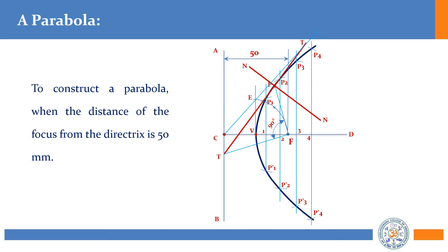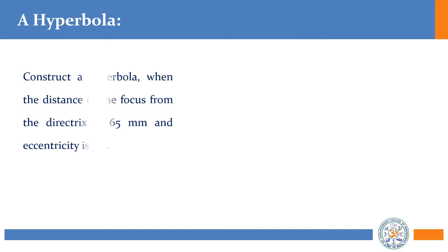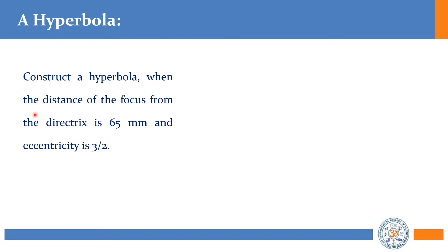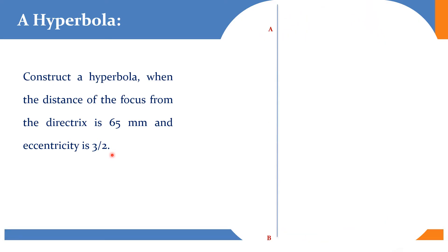This is the procedure to construct a parabola. The same procedure you need to follow to construct the hyperbola. For the hyperbola, the construction is very similar to the parabola — the only difference is the eccentricity, which shifts the vertex a little towards the left side from the center. The problem: construct a hyperbola when the distance of the focus from the directrix is 65 mm and eccentricity is 3/2 (which equals 1.5, so it is more than 1, confirming it is a hyperbola).